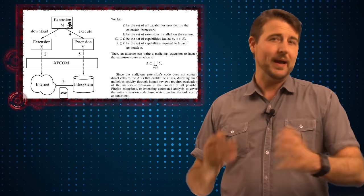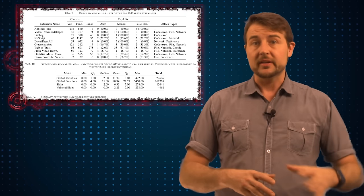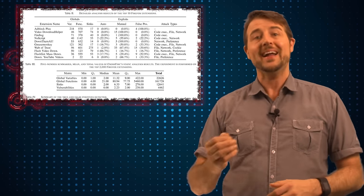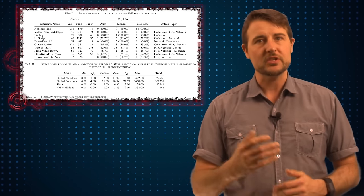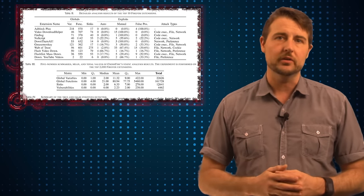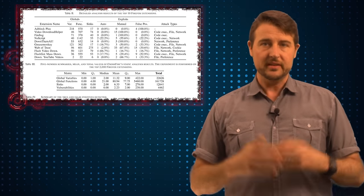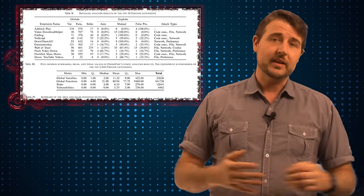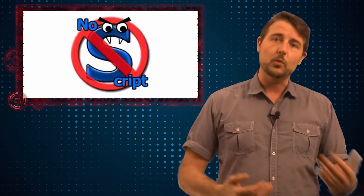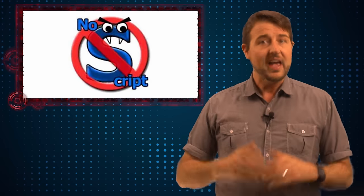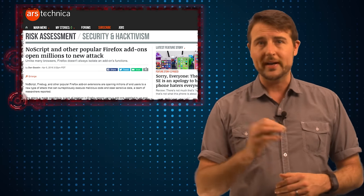So these are pretty concerning flaws — bad guys might be able to use them to execute code. But there is good news here. The only way this attack works is if a bad guy can not only get you to download a malicious extension, which could be hard to do, but you also have to have some of the other vulnerable extensions installed as well. Nonetheless, I found it interesting. I recommend NoScript all the time, I like extensions like Web of Trust, and the fact that this vulnerability takes advantage of those extensions is quite interesting.